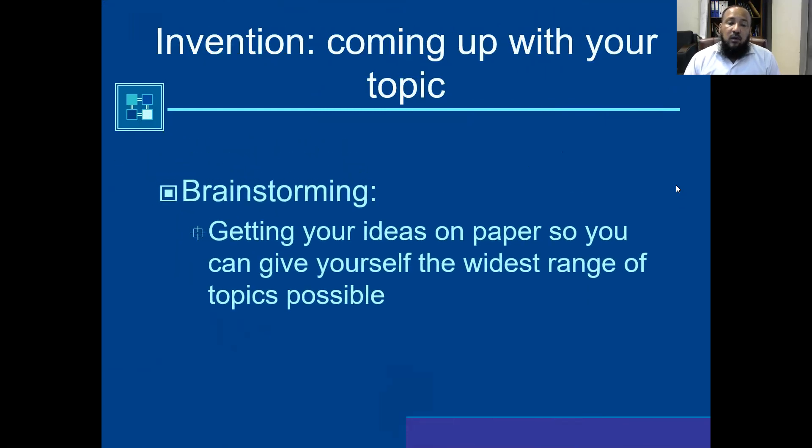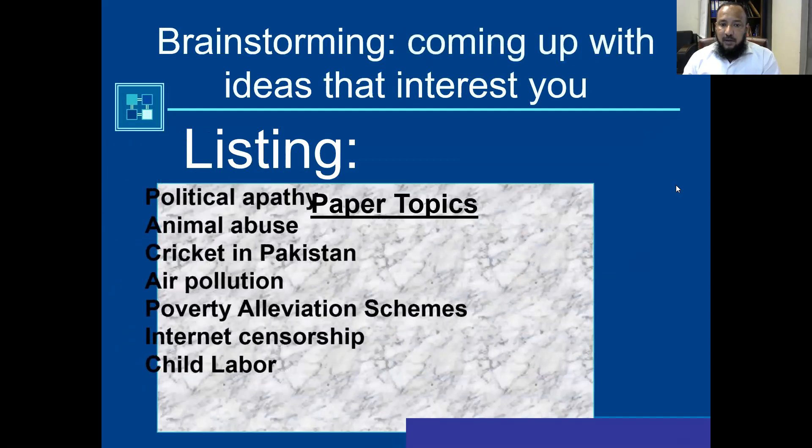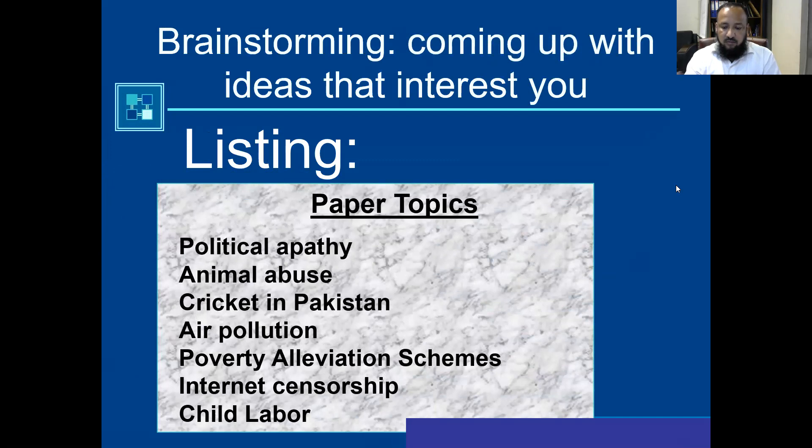Invention. Come with your topic. Now see brainstorming. In this regard, how do you want to write? What kind of style do you want to write? Getting your ideas on paper so you can give yourself the widest range of topics possible. Now see, you may say from education, business, religion, history, anthropology, sociology, science, geology, geography, and so many subjects where you feel you are having the command and expertise in the subject, so you can go to the topics.